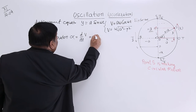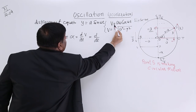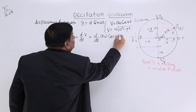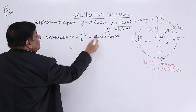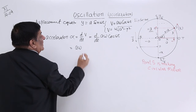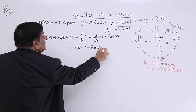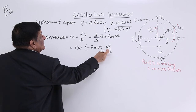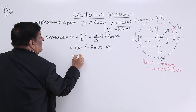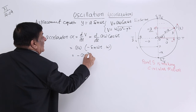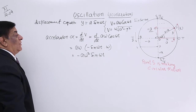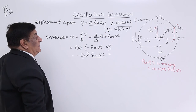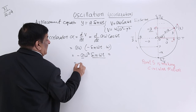Alpha is equal to the differentiation with respect to time of velocity. So α = d/dt of v, where v = aω cos(ωt). Differentiating: aω are constants, so d/dt of cos(ωt) is −sin(ωt) × ω. This gives us −aω² sin(ωt). Now, a sin(ωt) is simply y, so this becomes −ω²y.